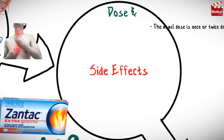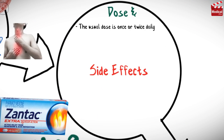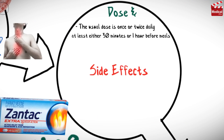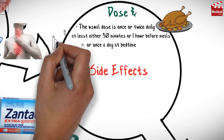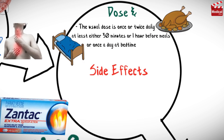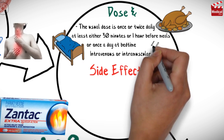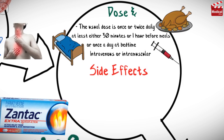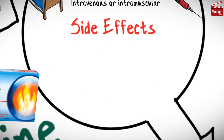The usual dose of ranitidine is once or twice daily, taken at least 30 minutes to one hour before meals, or once a day at bedtime. It can also be administered as an intravenous or intramuscular injection.